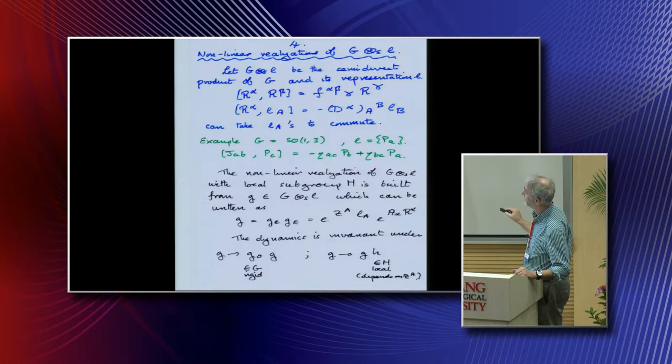I want to do the non-linear realization of this. In the non-linear realization you select a G and an L and you also select a subgroup H. It's very simple. You take some group element with generators R_alpha, you have some parameters A_alpha, and for L you have some parameters Z_A. It'll turn out that these are the coordinates of a space-time and these are the fields and they depend on that.